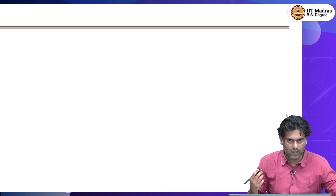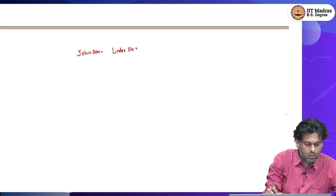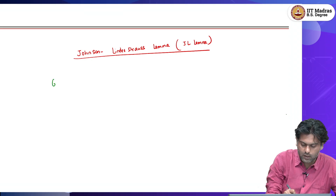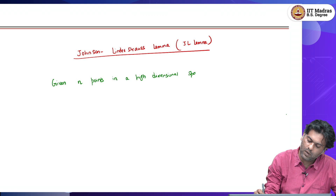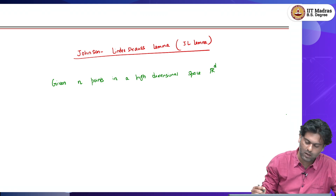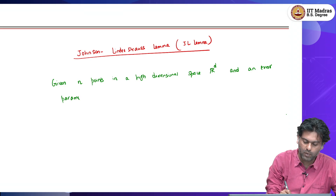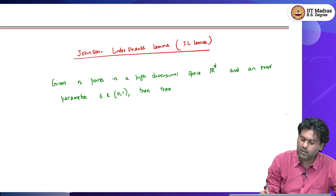This is called the Johnson-Lindenstrauss Lemma, or sometimes the JL Lemma. It states the following: if you are given n points in a high-dimensional space — let us call this space R^d — and an error parameter epsilon within (0, 1), then let me state the lemma.